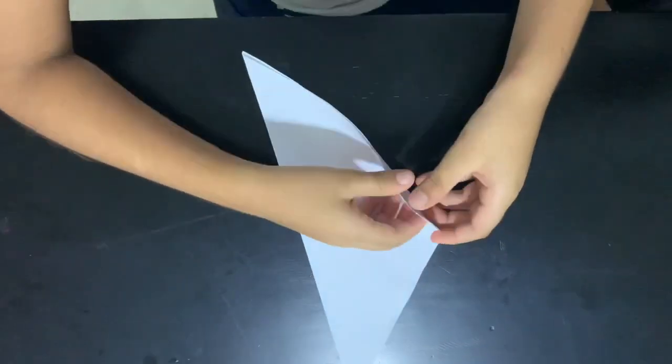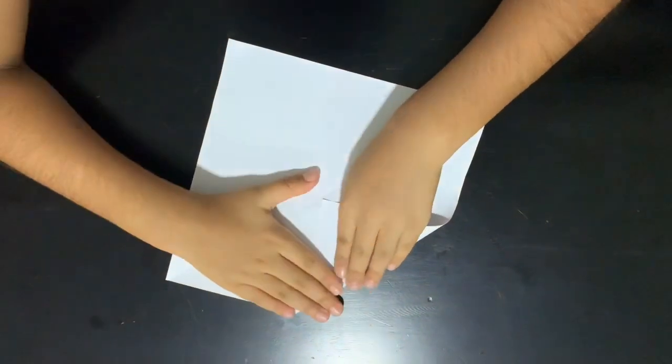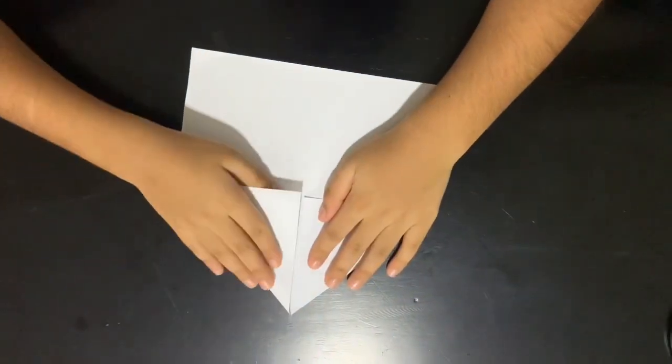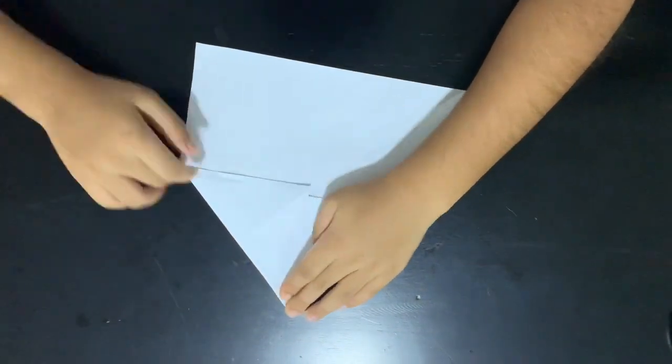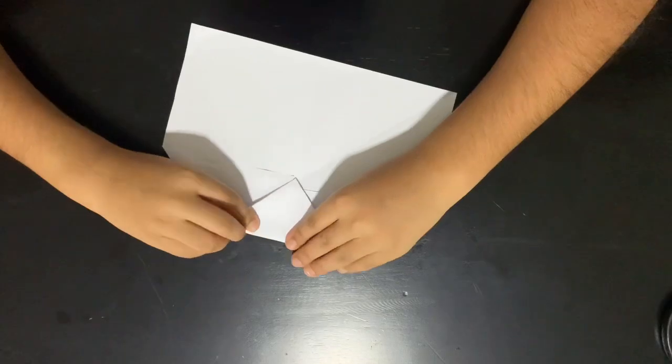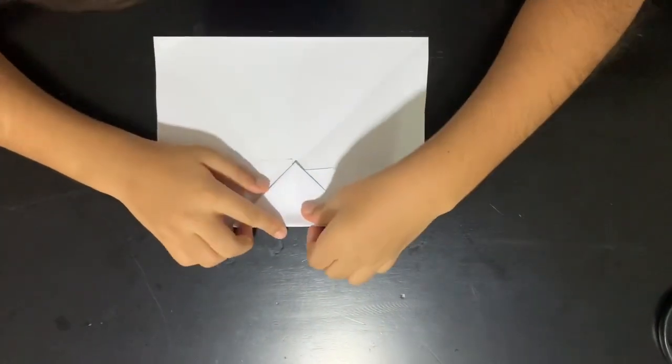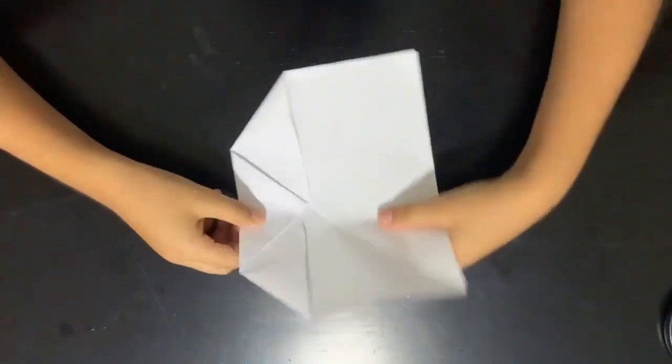To start, you open the paper and do an airplane fold to the middle. Then take the top corner and fold it to the bottom, fold it to the bottom. And then fold it in half.